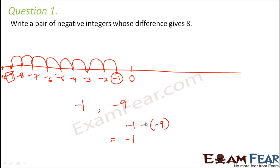So this would be same as subtracting minus 9 from minus 1 would be same as adding the additive inverse of minus 9, which is 9. So minus 1 plus 9 would be plus 8.